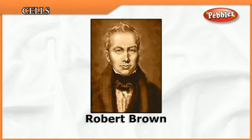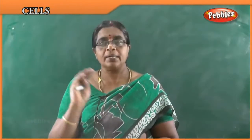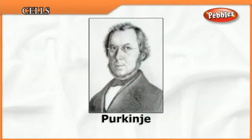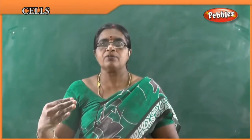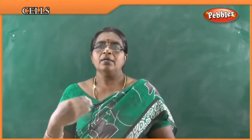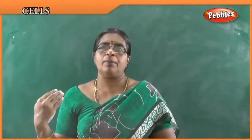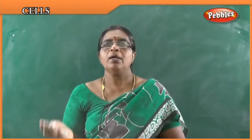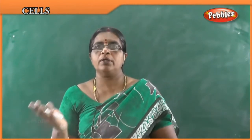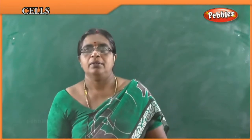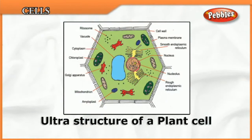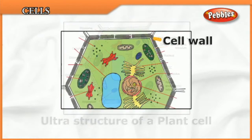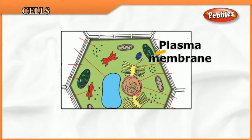Next we'll look at the difference between plant cell and animal cell. In a plant cell, you can see the outer cell wall, then the cell wall, then the plasma membrane, smooth endoplasmic reticulum, mitochondria, ribosomes, a large empty vacuole, cytoplasm, Golgi apparatus, amyloplast, and rough endoplasmic reticulum. The nucleus contains the nucleolus inside it.